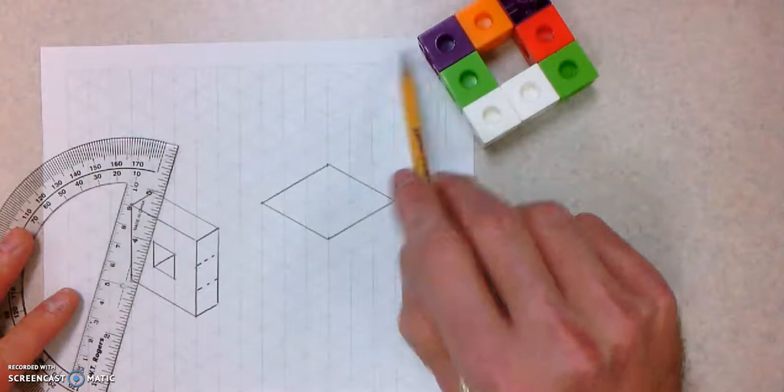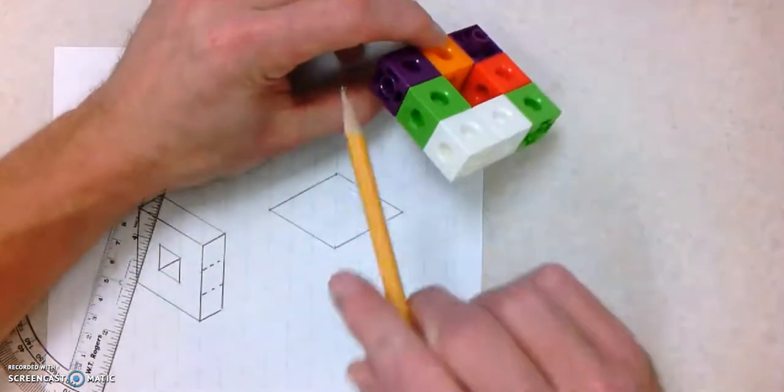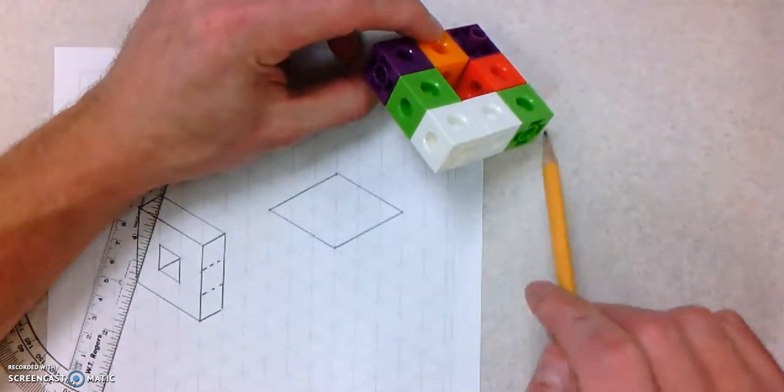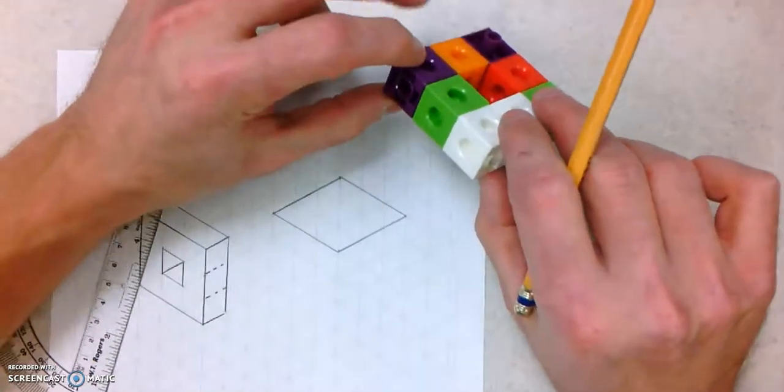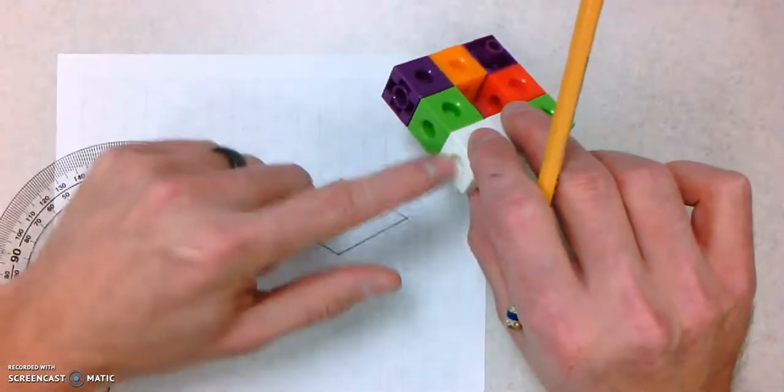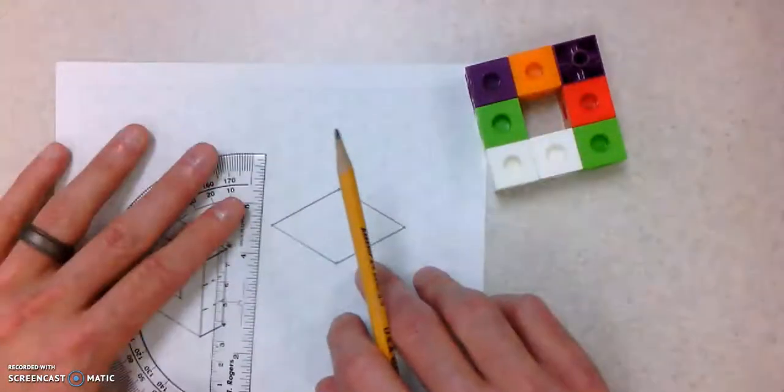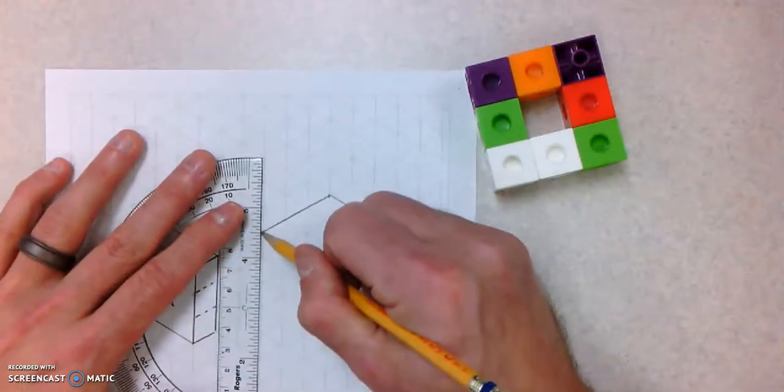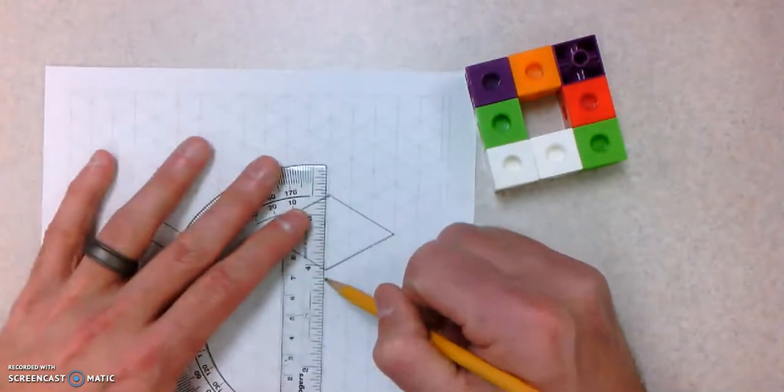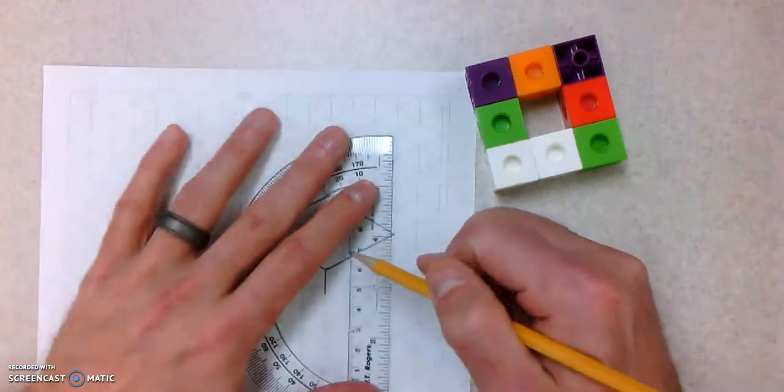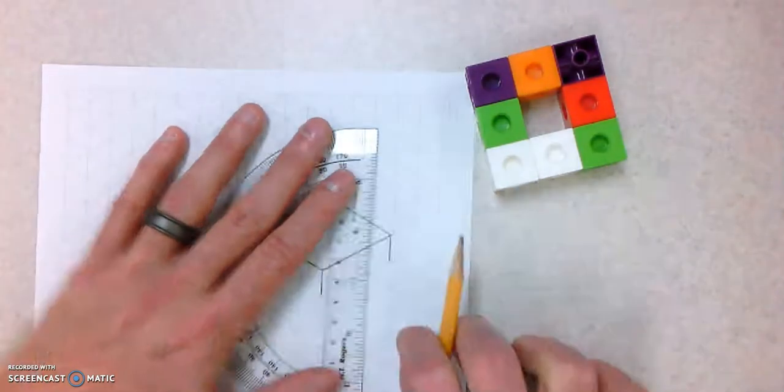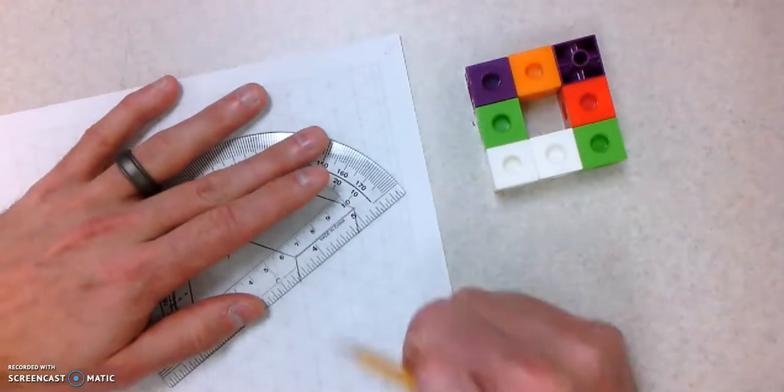Now I'm going to work on these lines right here. There's three of them. And they're one cube tall as of right now because this is my front view. And I'm going to finish that part off.